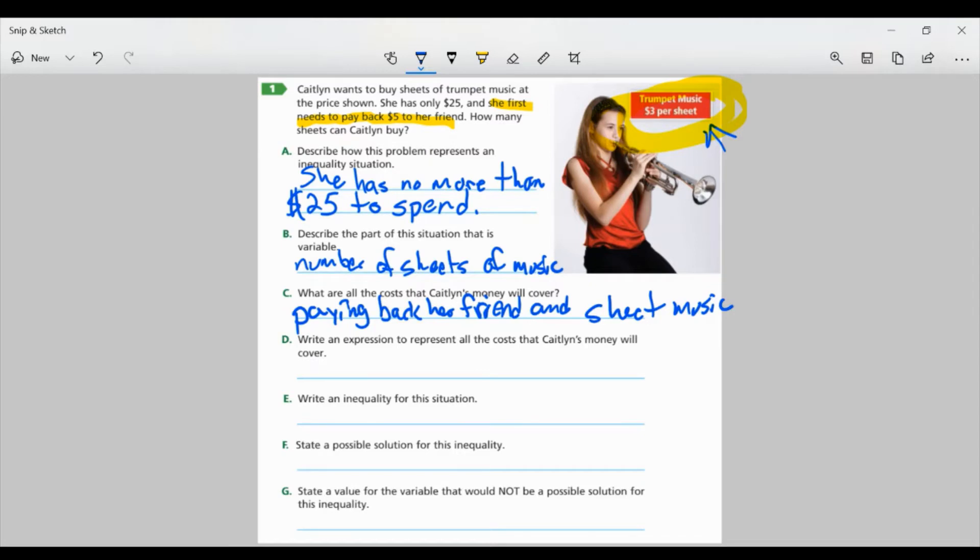Part D. Write an expression to represent all the costs that Caitlin's money will cover. Well, like we said, she has to pay $5 to her friend, plus it's $3 per sheet, which was X. So we could write it as 5 plus 3X, or 3X plus 5, which is the more traditional way with the variable in front.